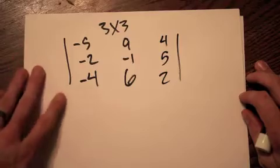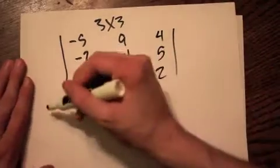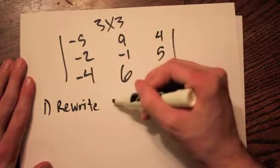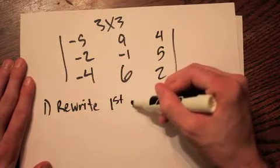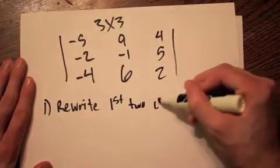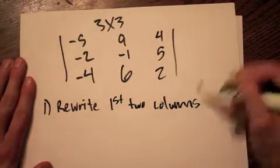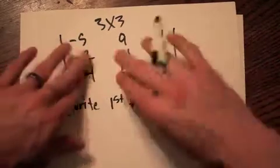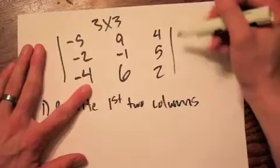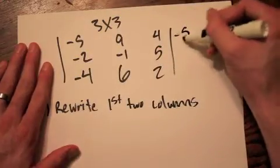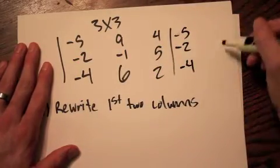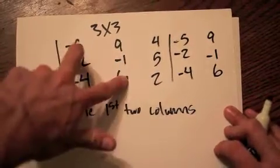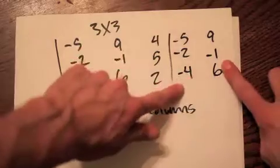Our first step when we're finding the determinant is we're going to rewrite the first two columns, and we're going to do that directly to the right of our matrix. So these are our first two columns — we're basically going to copy and paste to right here: negative 5, negative 2, negative 4, 9, negative 1, and 6. Just take these two columns and copy and paste them to right here.